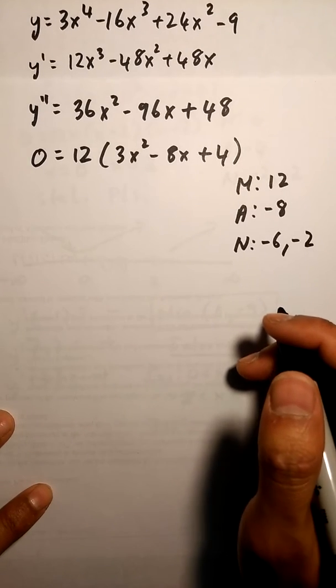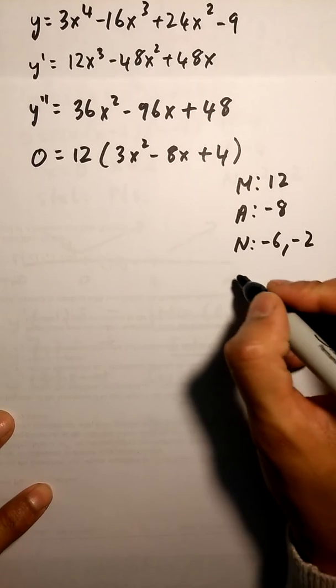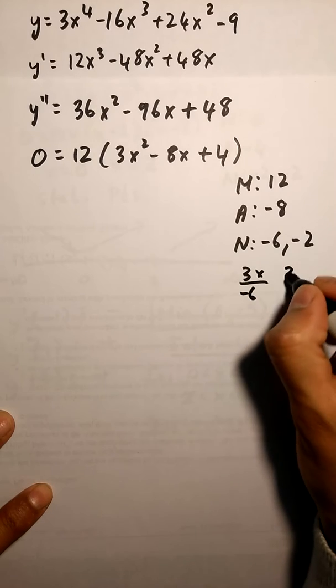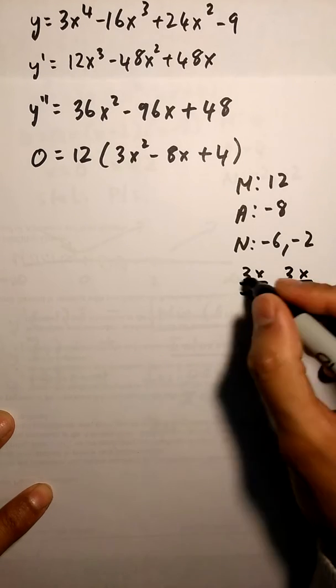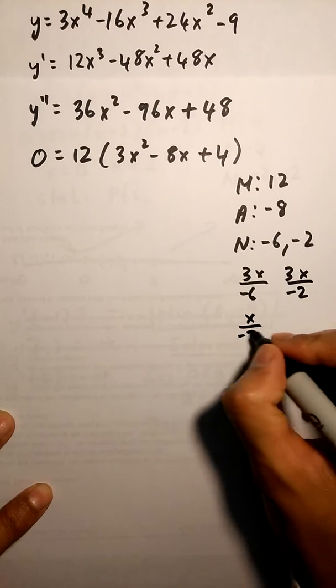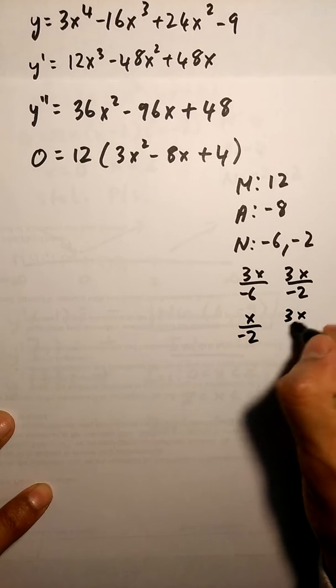Once I do this, I have to do my fractions, so it's going to be 3x over negative 6 and 3x over negative 2. This one can be simplified to x over negative 2, that one is going to stay the same.